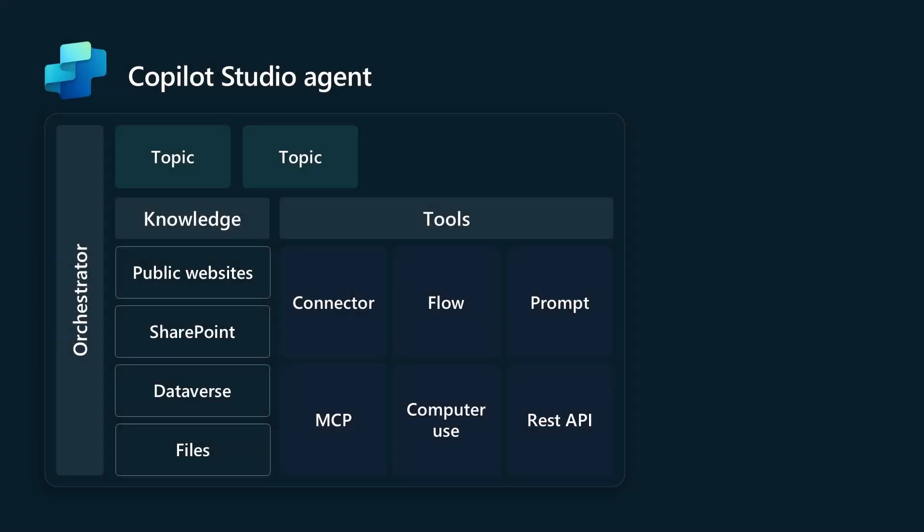Let's start with the way the orchestrator works inside Copilot Studio today, where you have different topics, different pieces of knowledge, or different tools. Those tools could be a connector, an MCP server, flows, or prompts — all these different things available as tools that can be orchestrated alongside topics and knowledge to service the user's request.